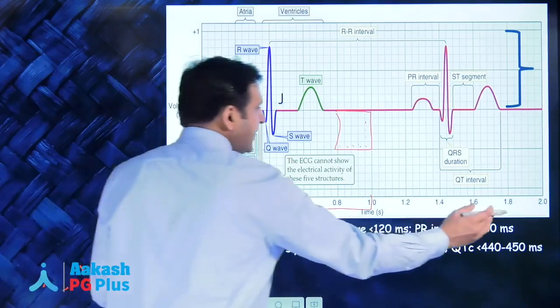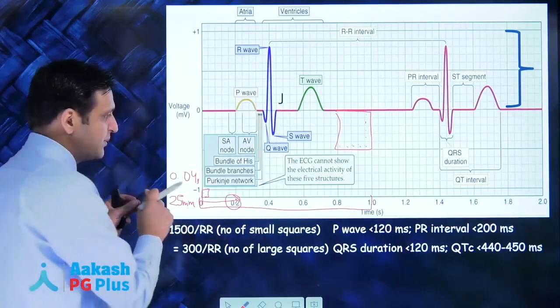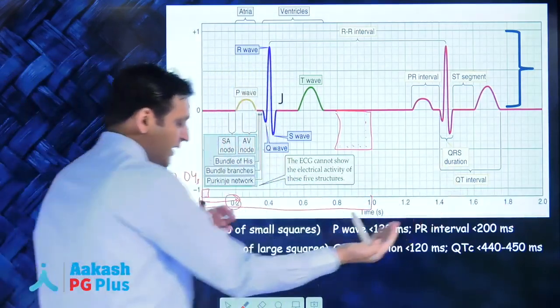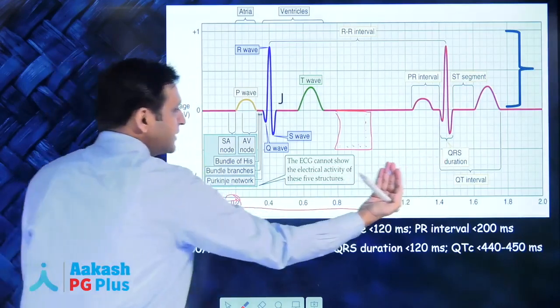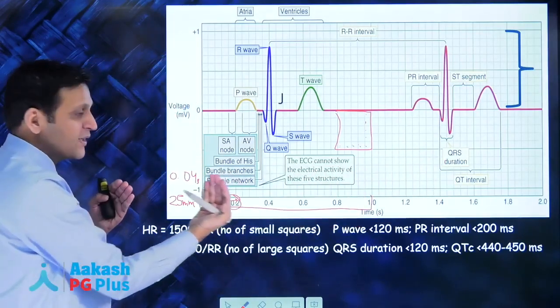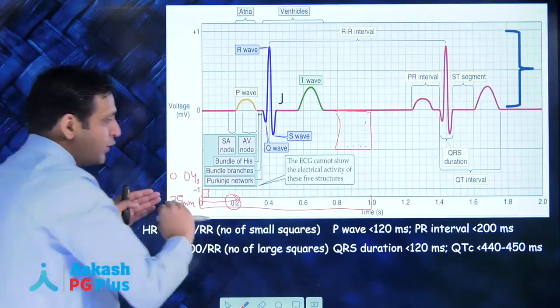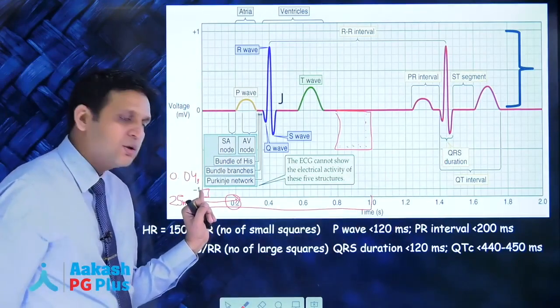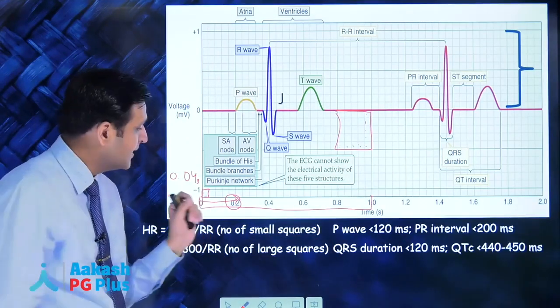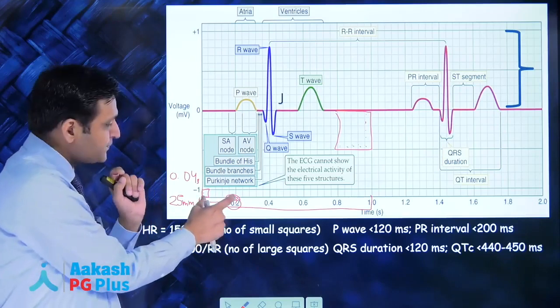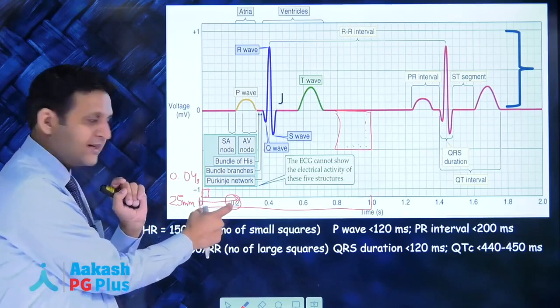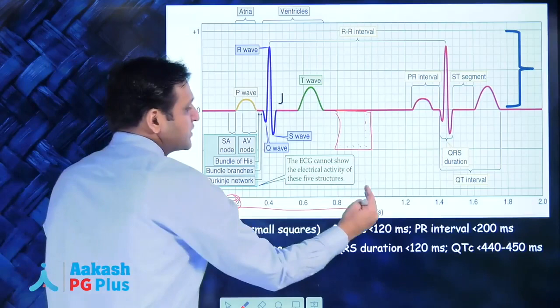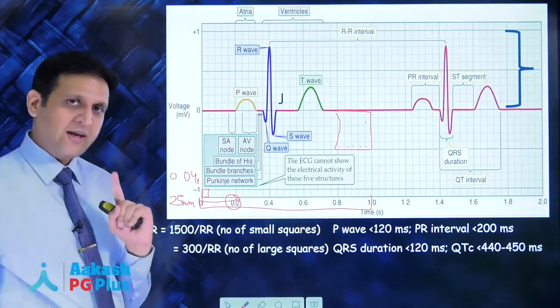This square is 40 milliseconds, and each large square, since it has 5 small squares, would be 40 times 5, that's 200 milliseconds or 0.2 seconds. Horizontally it's the time interval because the machine is moving - when you get an ECG strip it comes out at a speed of 25 millimeters. On the horizontal axis you have small squares of 40 milliseconds, large squares of 200 milliseconds, and 5 large squares in 1 second.